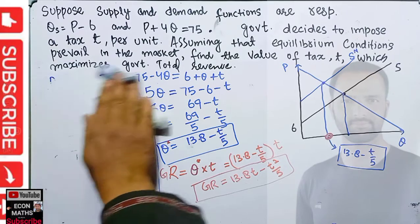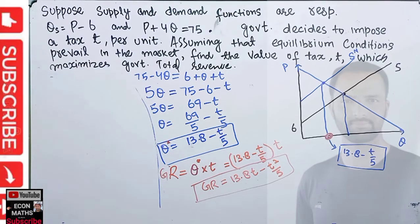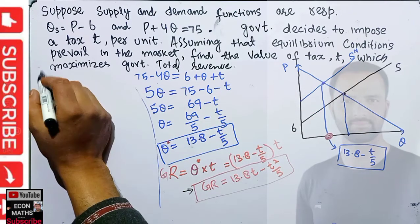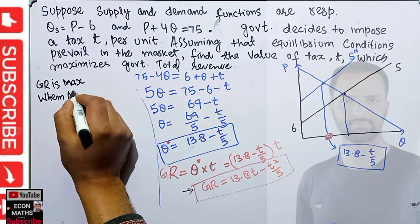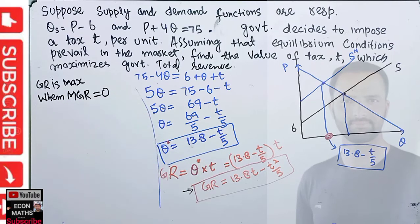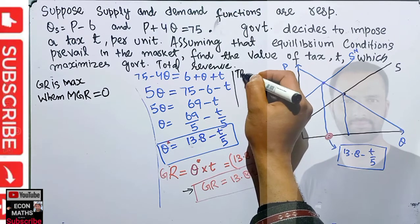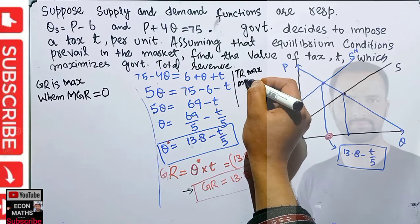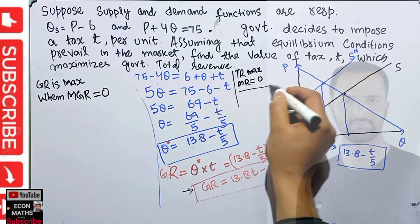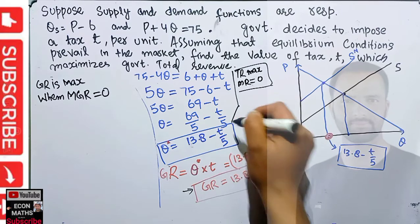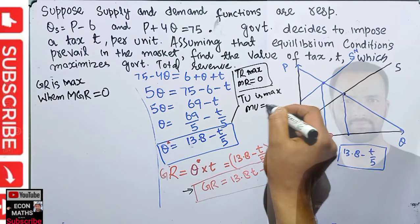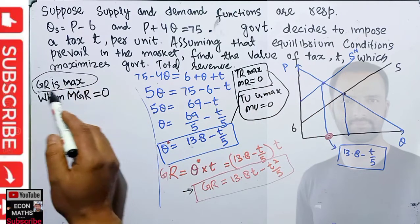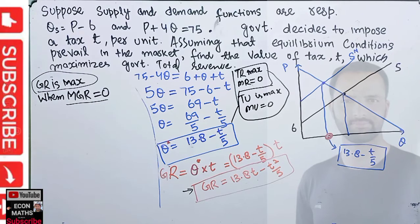Now we need to find the value of tax rate T which maximizes this government's total revenue. Government revenue is maximum when marginal government revenue equals zero — the same principle as when total revenue is maximum when marginal revenue equals zero, or when total utility is maximum when marginal utility equals zero.